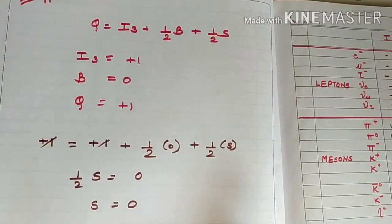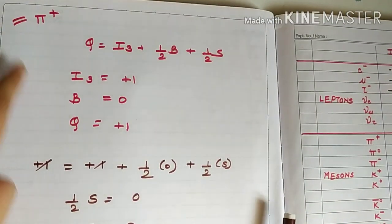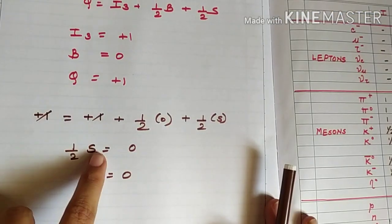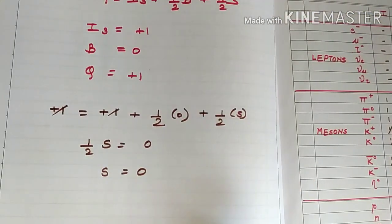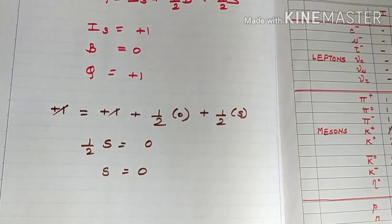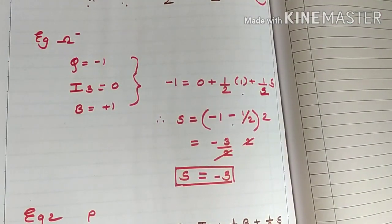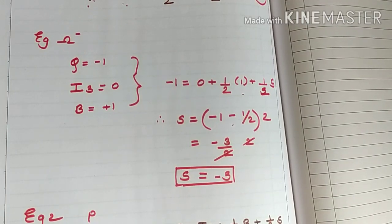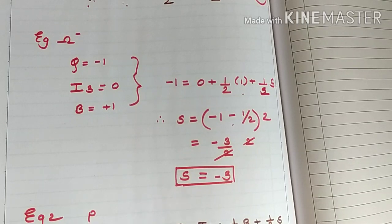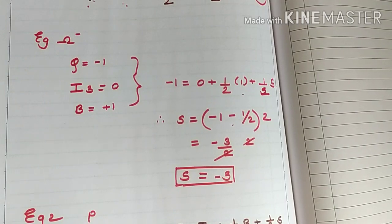Solving for S, we get S equal to zero. Thus pi positive — the positive pion — has strangeness equal to zero; it is a non-strange particle. I hope you have noted down all the values of I3, B, and I from our previous videos. Now let's start with the derivation of strangeness for omega minus.